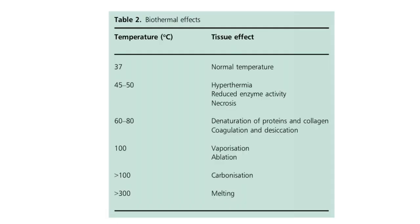The biothermal effects at various temperatures: 37°C is normal temperature; 45–50°C is hyperthermia with reduced enzyme activity and necrosis; 60–80°C causes denaturation of proteins and collagen, coagulation and desiccation; 100°C causes vaporisation and ablation; above 100°C is carbonisation; and above 300°C there is melting. Usually we use temperatures around 50–60°C to achieve the desired surgical effect.